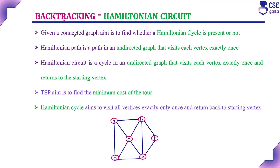Given a connected graph, the aim is to find whether a Hamiltonian cycle is present or not. A Hamiltonian cycle is: start from one vertex — that will be considered as the starting vertex — visit all other vertices in the given graph exactly only once, and return back to the starting vertex. That is nothing but a Hamiltonian cycle, otherwise called Hamiltonian circuit.